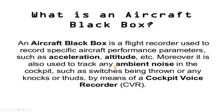In early ages, people called the flight data recorder or the cockpit voice recorders the black box. So what is an aircraft black box? An aircraft black box is a flight recorder used to record specific aircraft performance parameters such as acceleration, altitude, attitude, engine performance, etc. Moreover, it is also used to track any ambient noises in the cockpit. It also records the pilot and co-pilot voices, or the communication with the ground or other aircraft. So we have employed two types of systems into the black box: one is called the flight data recorder and the other is called the cockpit voice recorder.